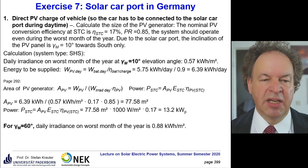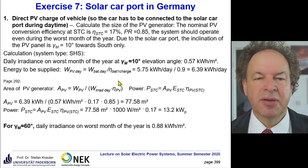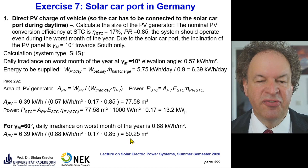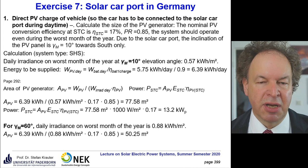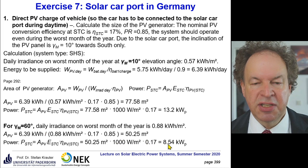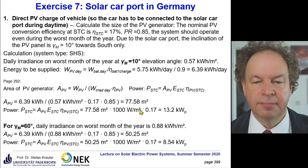If we apply 60 degrees of elevation, which is more favorable, the typical irradiance for the worst month is not 0.57 but 0.88 kWh per square meter. Then our necessary area is only 50.25 square meters — drastically reduced compared to the 10-degree solution. The equivalent power, putting 50.25 square meters times 1000 W/m² times efficiency under standard test conditions, gives 8.54 kilowatt-peak.